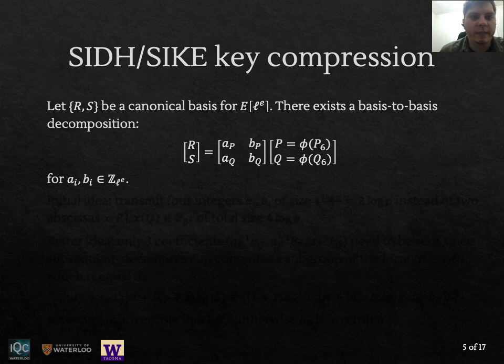So now we can move on to the ideas behind SIDH key compression. Let E be the public key elliptic curve. It is always possible to build a canonical basis for the ℓ^e torsion here denoted by the points R and S that everyone agrees upon. And because the private isogeny φ preserves the linear independence of the points P6 and Q6, the points P and Q are also going to be a basis for that same torsion. This means that a base change matrix should exist and it's given by these A's and B's coefficients here that are just small integers mod ℓ^e.